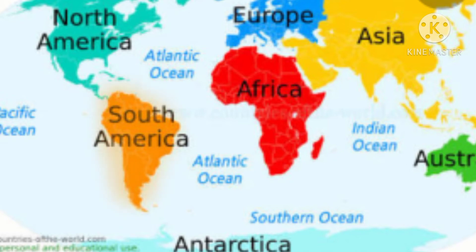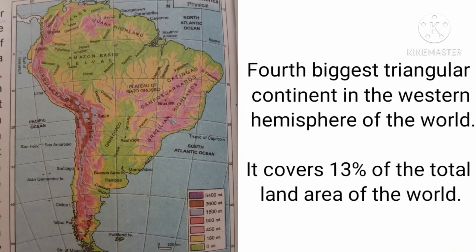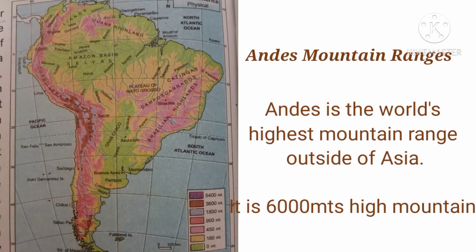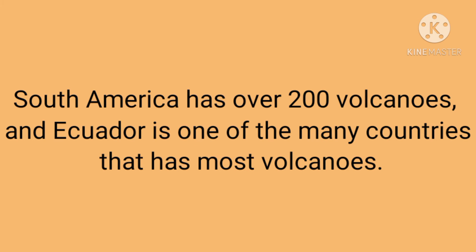South America is the 4th biggest triangular continent in the Western Hemisphere of the world. It covers 13% of the total land area of the world. The Andes is the world's highest mountain range outside of Asia, shown by a pink blinking line — it is a 6,000-meter-high mountain range. South America has over 200 volcanoes, and Ecuador is the country with the most volcanoes.